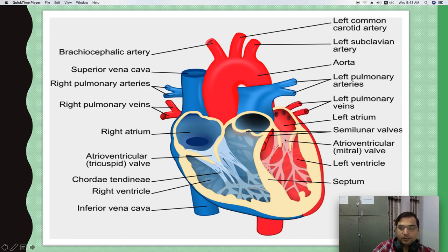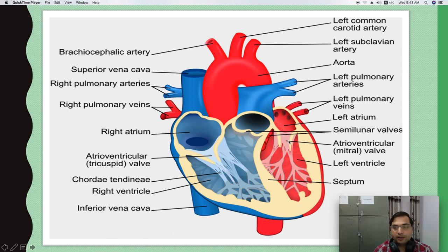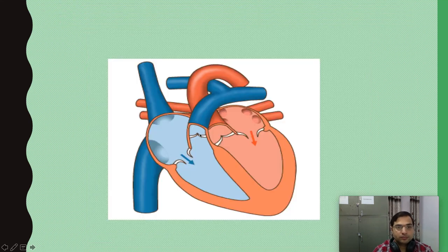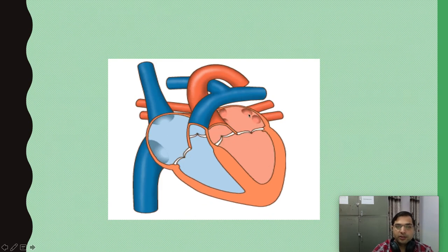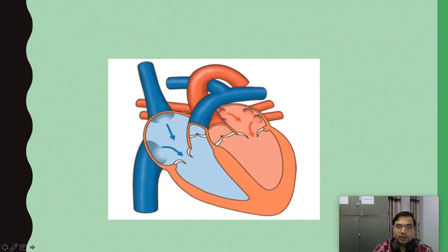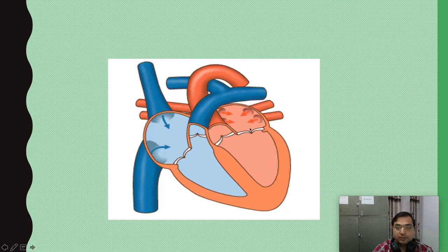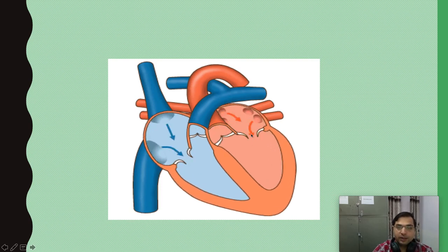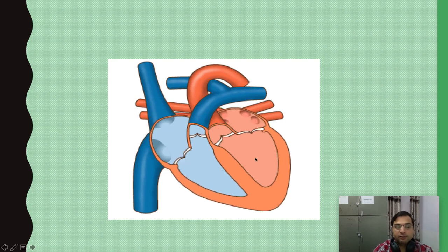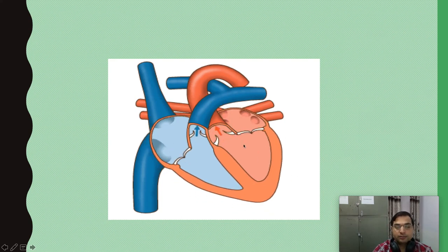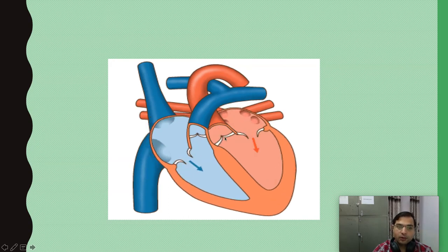To remember: the left side is the oxygenated side — it is friendly, so it is the mitral valve, and friends are two, so it is bicuspid — it has only two cusps. You can see blood pouring from the pulmonary veins into the left atrium, flowing into the left ventricle through the bicuspid or mitral valve, and then flowing into the arc of aorta, guarded by the aortic valve.